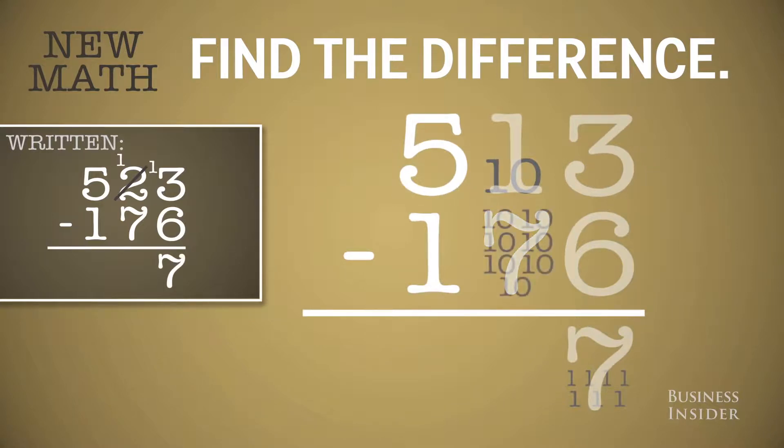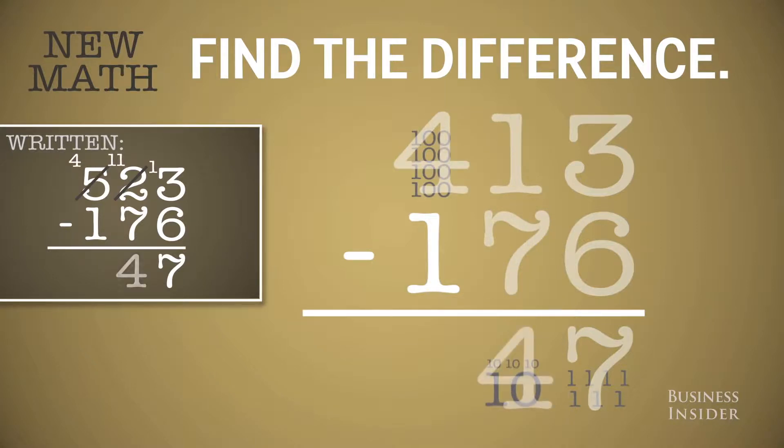And 7 is larger than 1, so you regroup your hundreds into 4 hundreds and 10 tens. 7 tens from 11 tens is 4 tens. And 1 from 4 is 3.